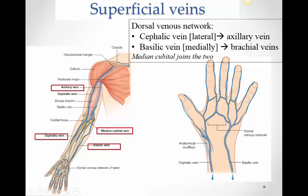In the cubital fossa there is a vein connecting the cephalic and basilic veins, known as the median cubital vein or antecubital vein — 'anti' meaning in front of. The arrangement can be a Y shape or straight across, varying from person to person. This vein is usually clearly visible and is the most common site for taking intravenous samples.